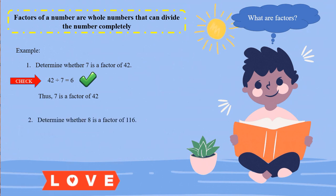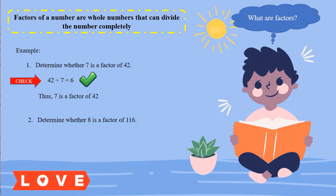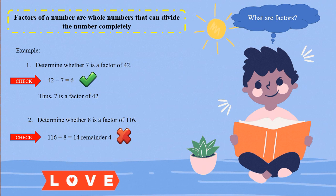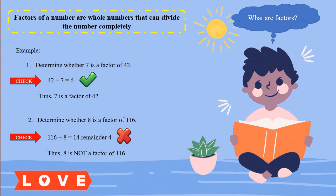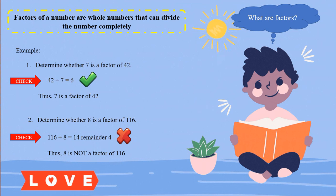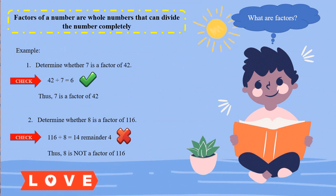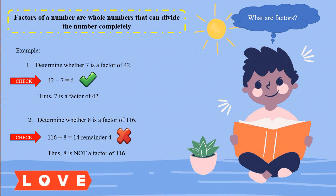Another example: determine whether 8 is a factor of 116. So we check: can 116 be divided by 8? We get 14 remainder 4, so 8 is not a factor of 116. So make sure when you want to determine whether a number is a factor of a given number, you divide. If you can divide completely, that is the factor. But if you have a remainder, that is not the factor of the given number.